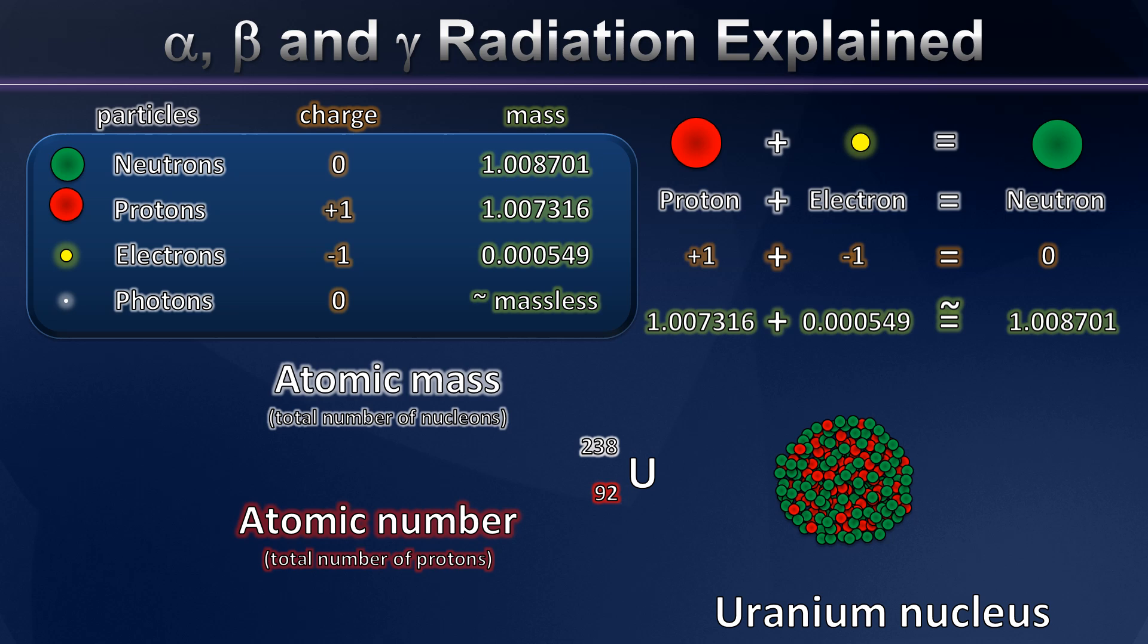This means it has an atomic mass of 238 and an atomic number of 92. It's this uranium nucleus that's going to start our discussion about the concept of nuclear radiation and help us to distinguish between and among alpha, beta, and gamma radiation. Let's start working on that right now.